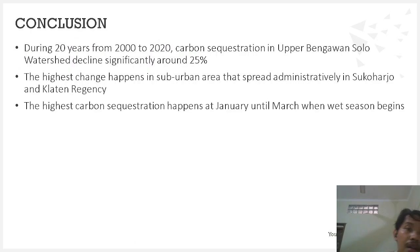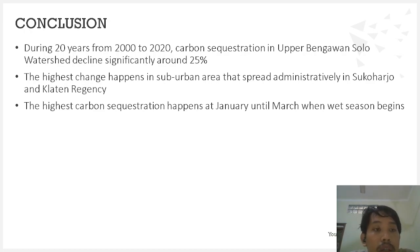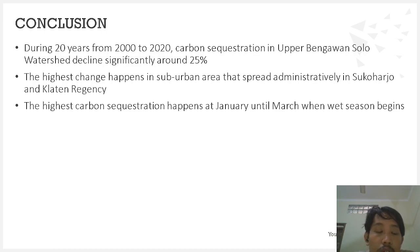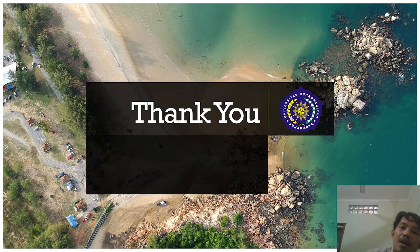In conclusion, during 20 years from 2000 to 2020, carbon sequestration in the upper Bengawan Solo watershed declined significantly, around 25%. The highest change happened in the sub-urban areas spread administratively in Sukoharjo and Karanganyar. The highest carbon sequestration occurred from January to March, during the wet season. Thank you. Assalamualaikum warahmatullahi wabarakatuh.